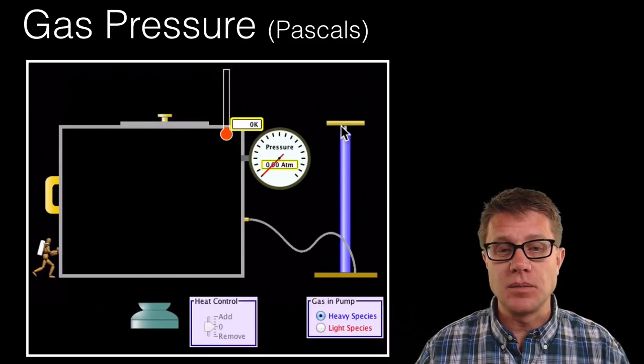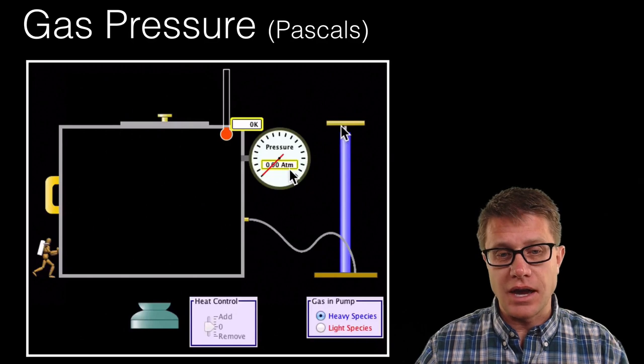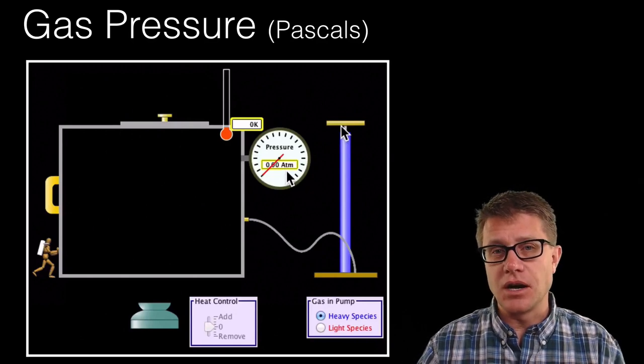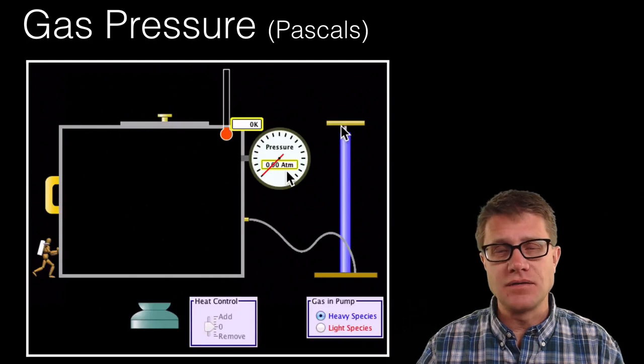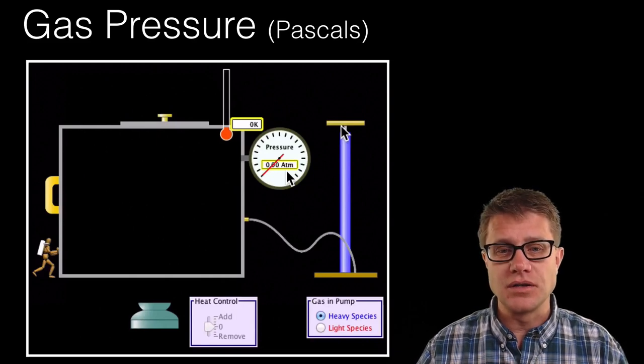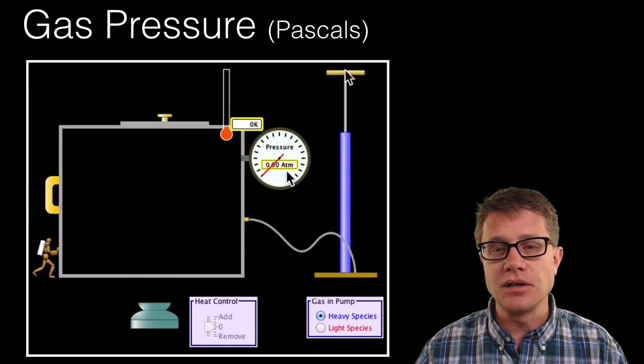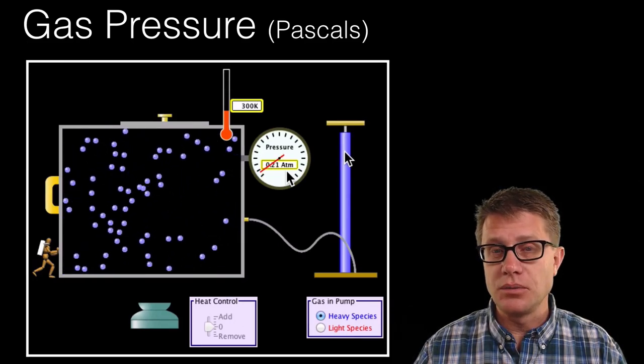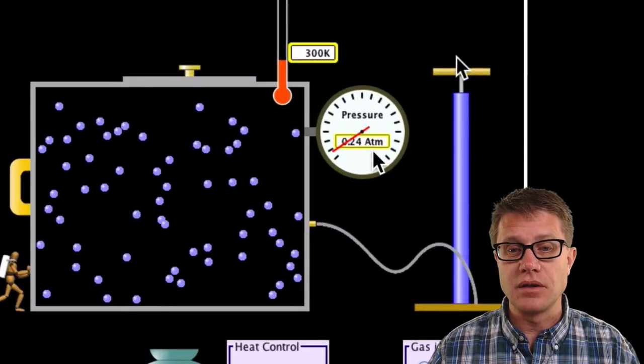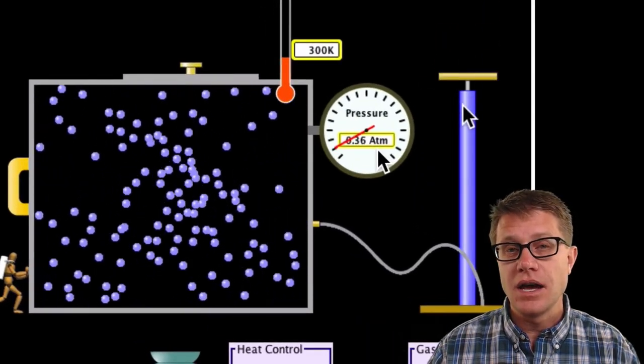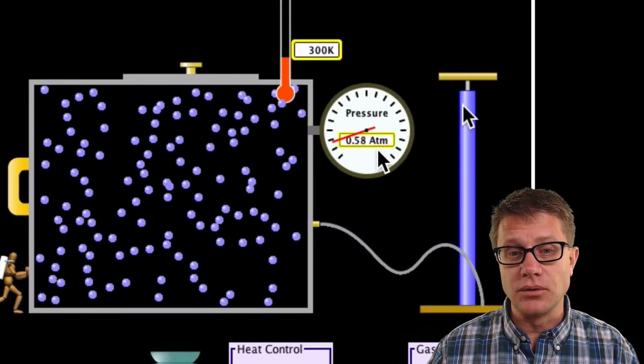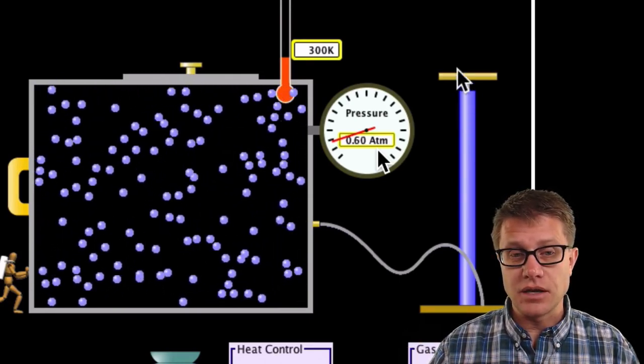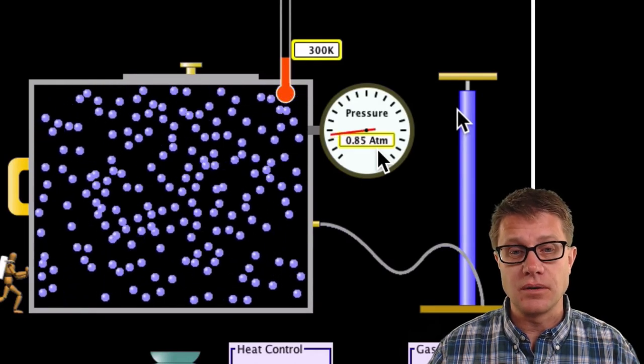So if we look at this PHET simulation, this measures pressure in atmospheres instead of pascals. One atmosphere is going to be 101 kilopascals. And that gives you a sense of how much pressure is inside the gas. So if I add some molecules to the container, what are we getting? Well we are starting to read pressure on the inside. It is colliding with the sides of the container. As I increase the number of molecules, watch what happens to the pressure. Again they are colliding with each other in the container and we are getting an increase in the pressure.